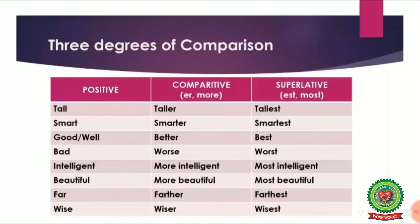Now, how do we know whether to add 'more' or '-er' to make the comparative, or 'most' or '-est' to make it superlative? If a word has three or more syllables, then we add 'more' in the comparative degree and 'most' in the superlative degree. For example, 'intelligent' has four syllables: in-tel-li-gent. So to make it comparative we add 'more', and for superlative we add 'most'.